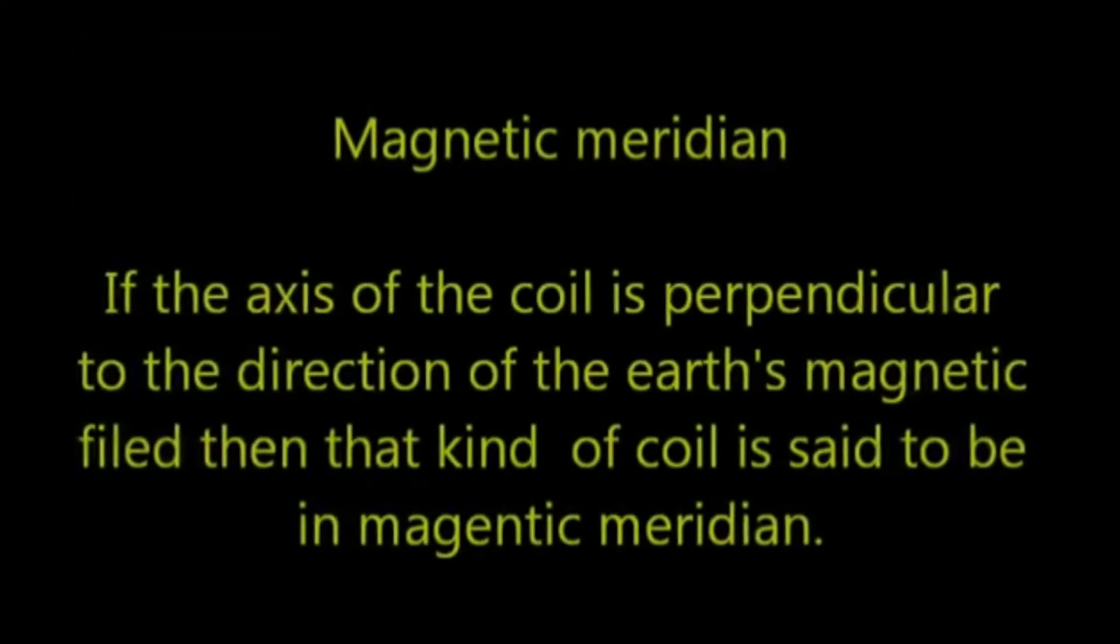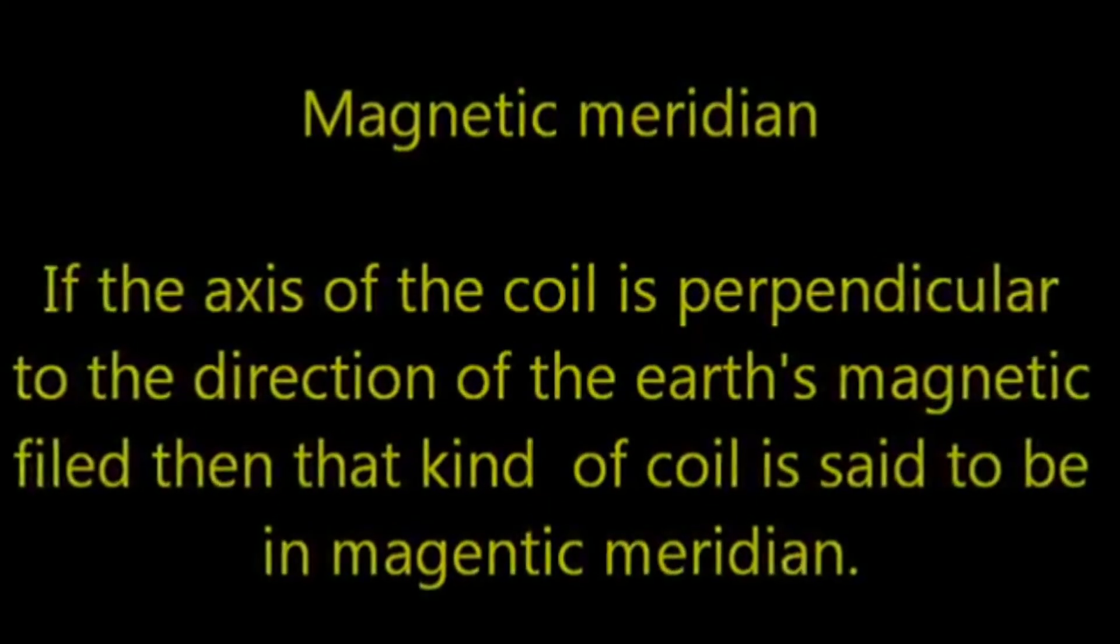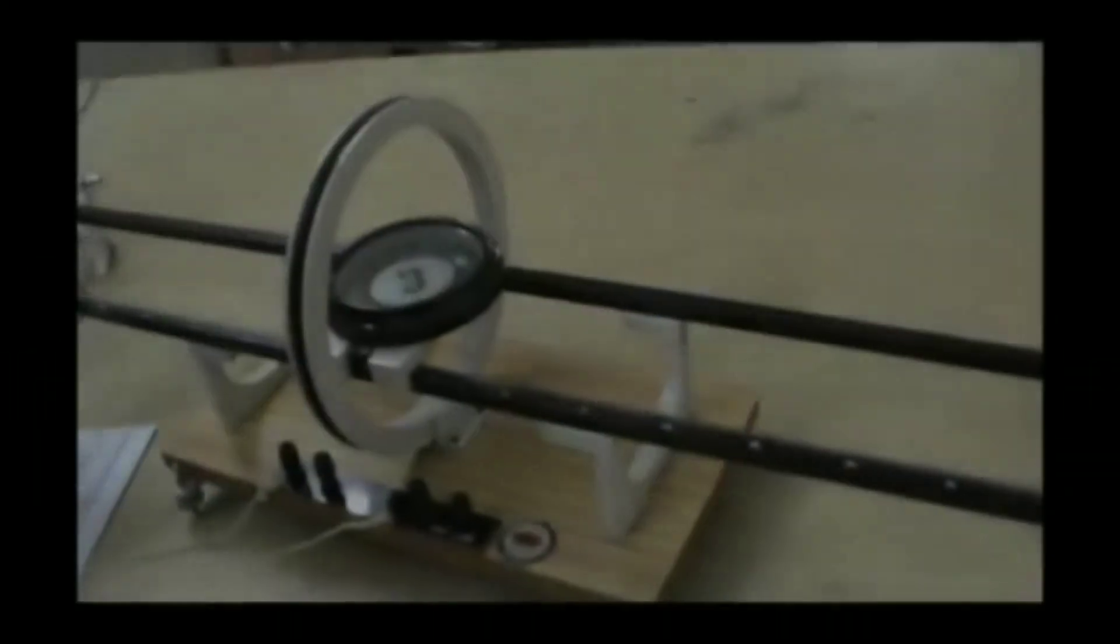If the axis of the coil is perpendicular to the direction of the Earth's magnetic field, then that kind of coil is said to be in magnetic meridian.